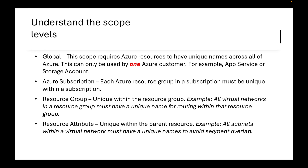At the resource attribute scope, resources must be unique within their parent resource. For example, all subnets within a virtual network must have a unique name to avoid segment overlap — you can't have two subnets with the same name. Understanding this scope is key so your naming convention gets approved without any hiccups in Azure.